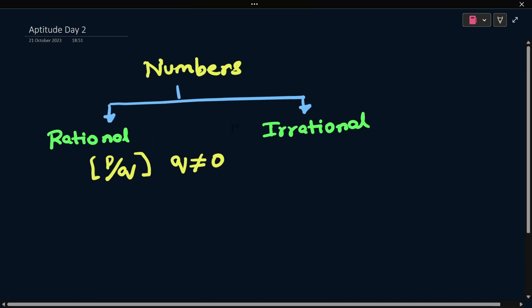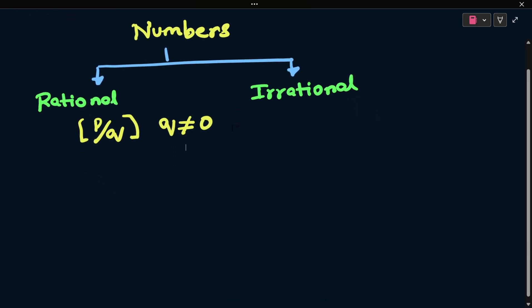Here is the rational numbers classification. Rational numbers is the most important classification. Here is the first classification.